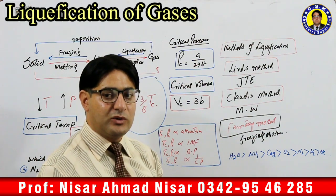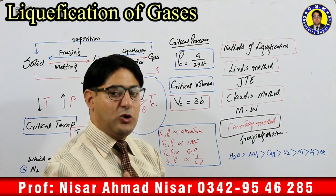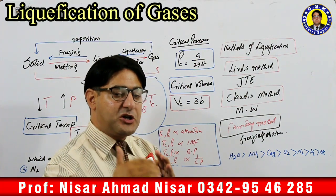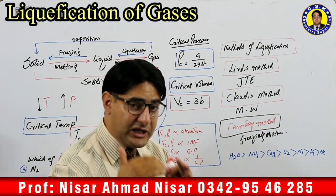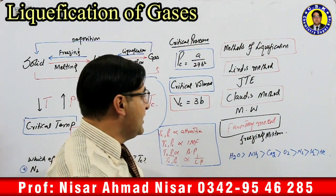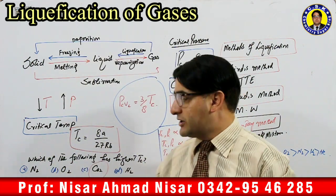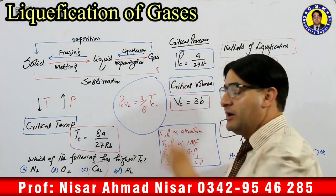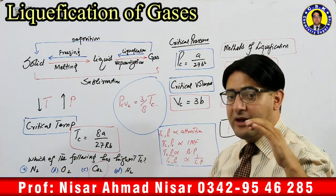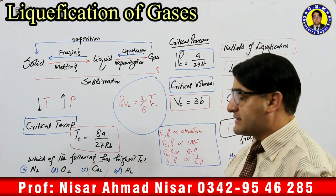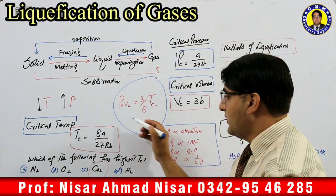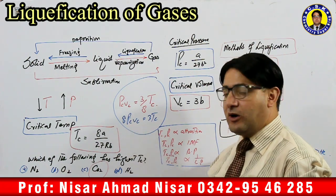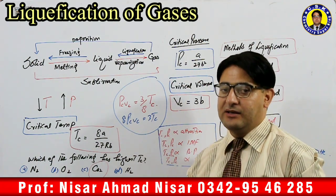The relationship between critical temperature, pressure, and volume is: Pc·Vc = 3RTc/8, which can also be written as Pc·Vc = (3/8)RTc. If any two of these three values are known, the third can be found. Simple as that.